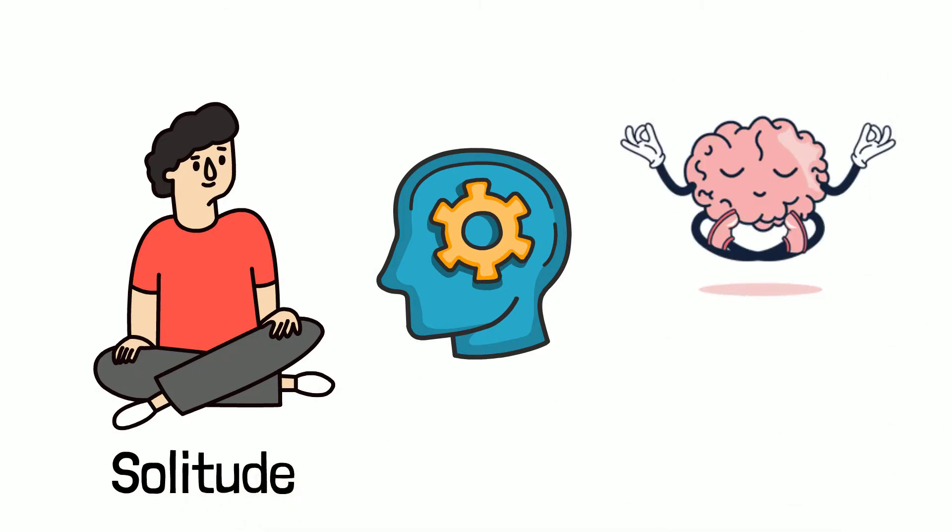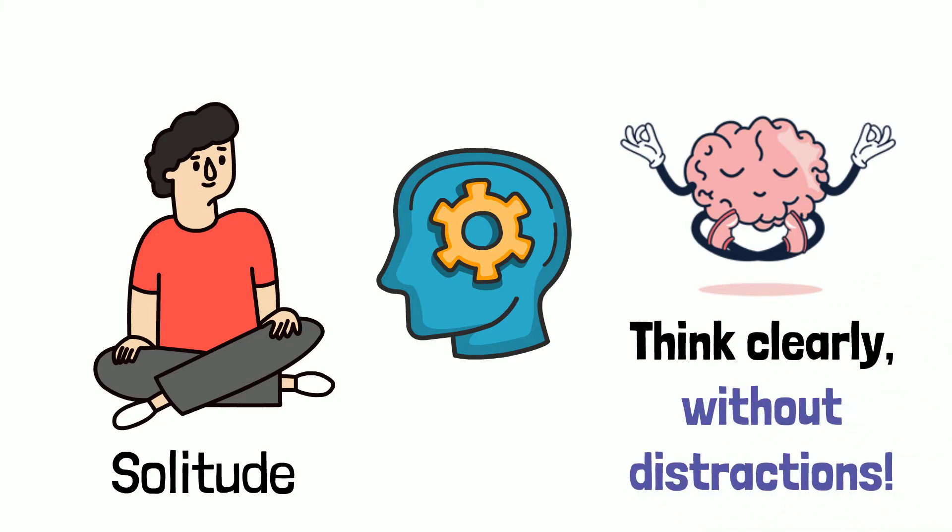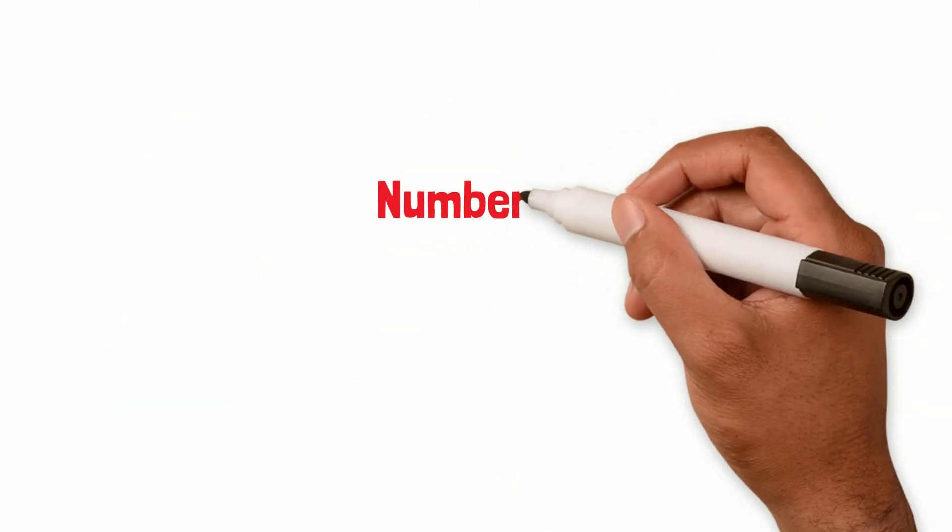Tracy suggests that in order to unlock the rational part of your brain, an extended period of solitude is required. Giving your brain space to rest and, more importantly, think clearly without distractions is imperative to unlocking your brain's full potential.